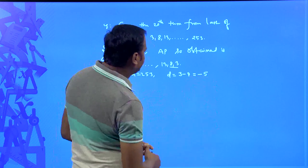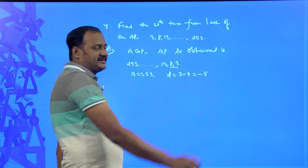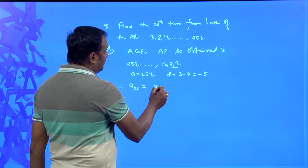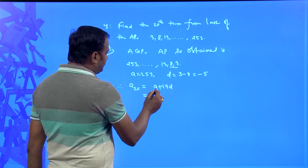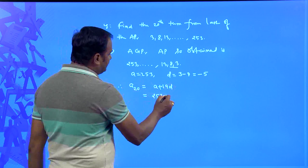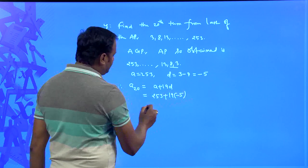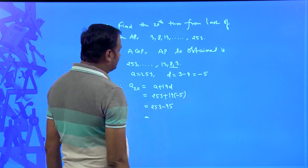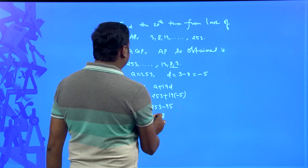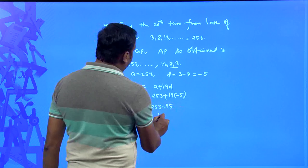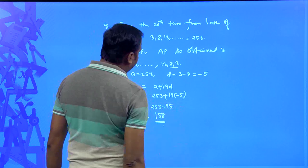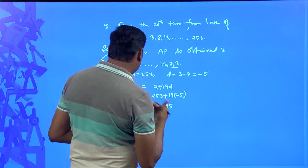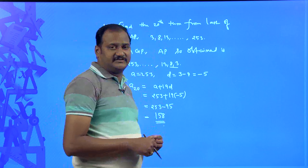Now the 20th term of this reversed AP is a₂₀ = a + 19d = 253 + 19 × (−5) = 253 − 95 = 158. So 158 is the 20th term from the last of this arithmetic progression.